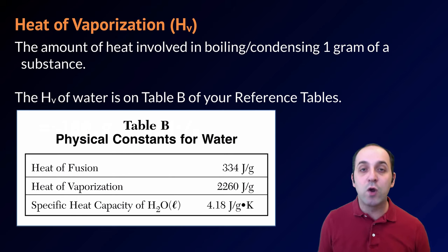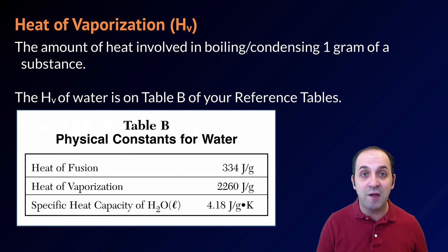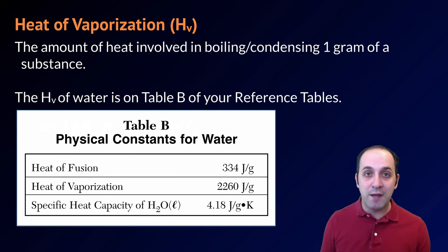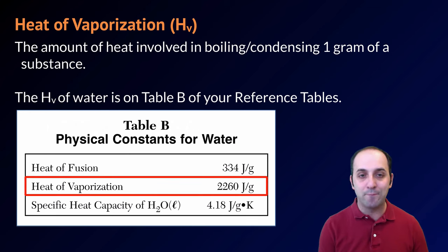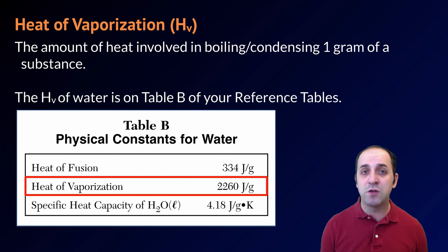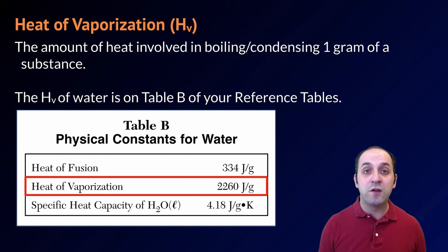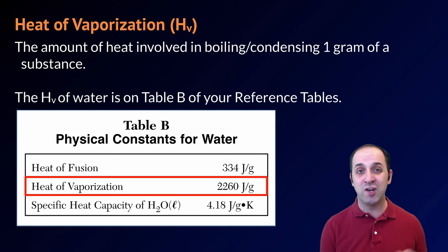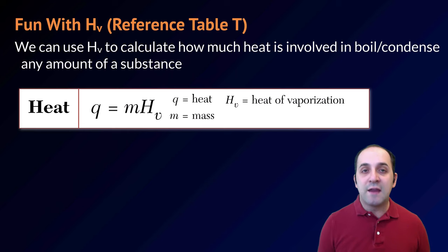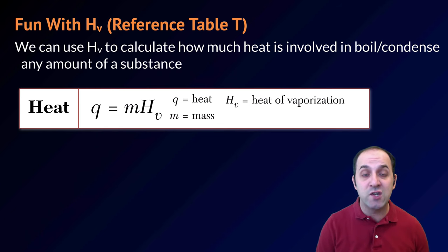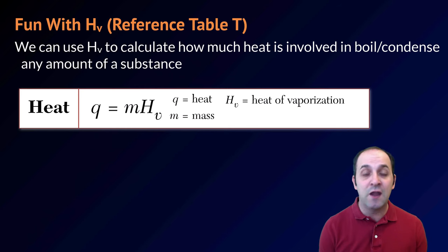When we want to boil or condense a substance we use a different constant: HV, or the heat of vaporization, which is the amount of energy needed to boil or condense one gram of a substance at its boiling point. HV for water is on reference table B, right below HF — it's 2260 joules per gram. Notice it's considerably larger than HF, and this is true for all substances. The energy needed to go from liquid to gas is much greater than from solid to liquid. The equation is Q = mHV from reference table T.